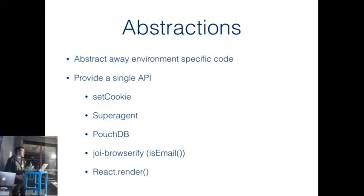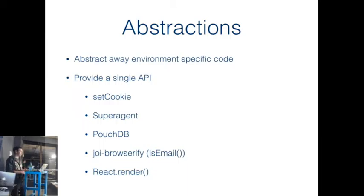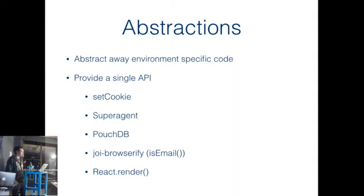Abstractions give you a single API that runs on both browser and server. Examples include cookie management, SuperAgent - which is like a request library for XHR - with a single API that works on both client and server. PouchDB for database access uses IndexedDB on the client and CouchDB on the server, and we use that in Live. Joi Browser is a cool idea - Joi is a model validation framework. For email, the server checks the MX record of a DNS server, but you don't want to do that on the client, so on the client it just uses regex to check if an email is valid. Same API, but extra validation on the server.